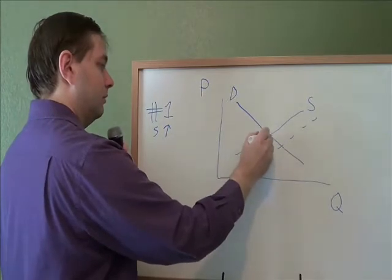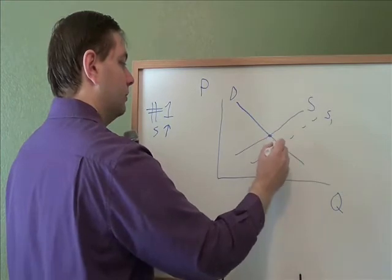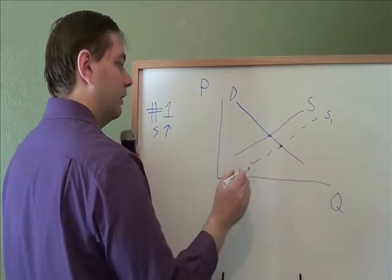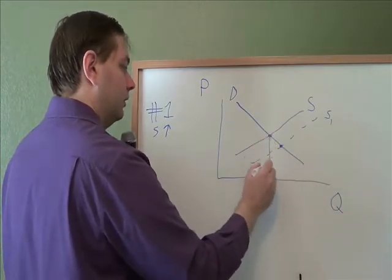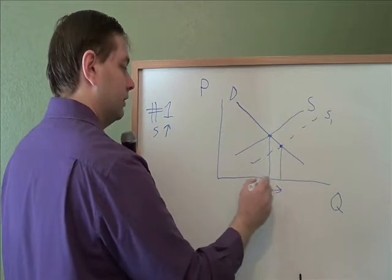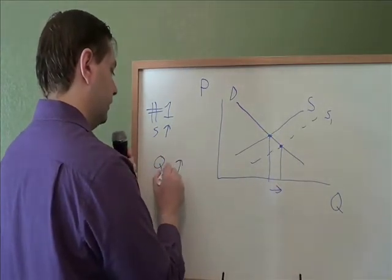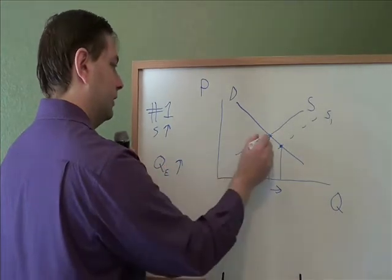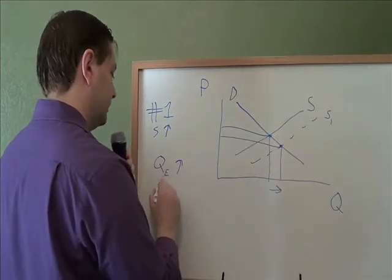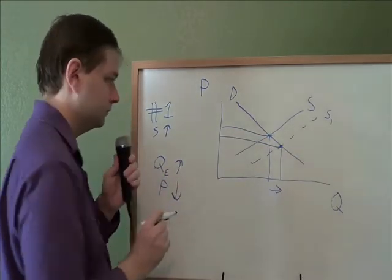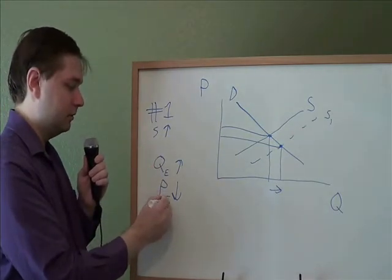Your old equilibrium was where the old lines met. But if your supply increases, you move to the right, and your new equilibrium is right there. So the quantity increased — it moved to the right. And the price had a downward movement, meaning the price went down. So when supply increases, equilibrium quantity increases and equilibrium price decreases.